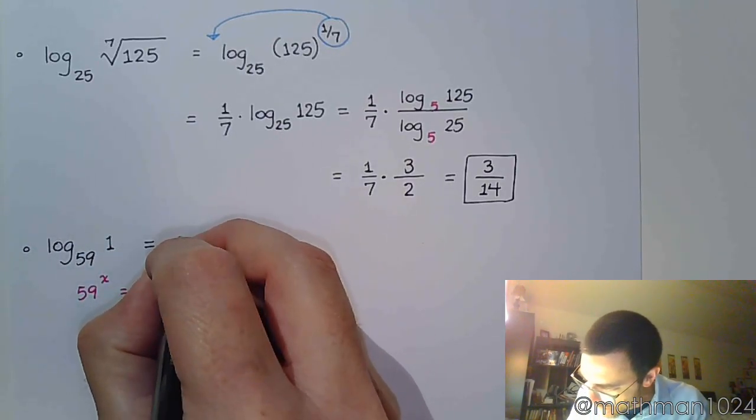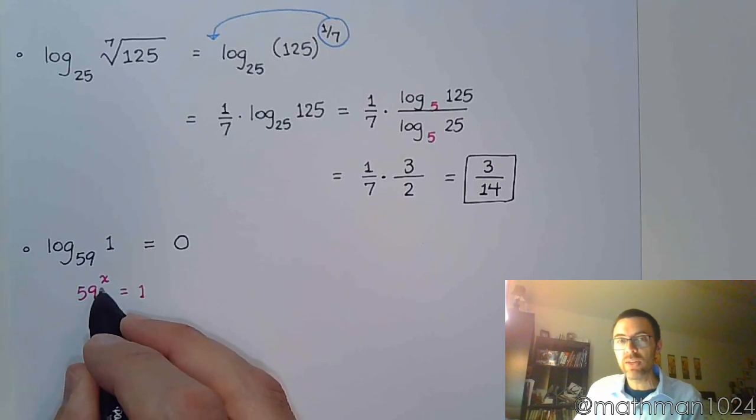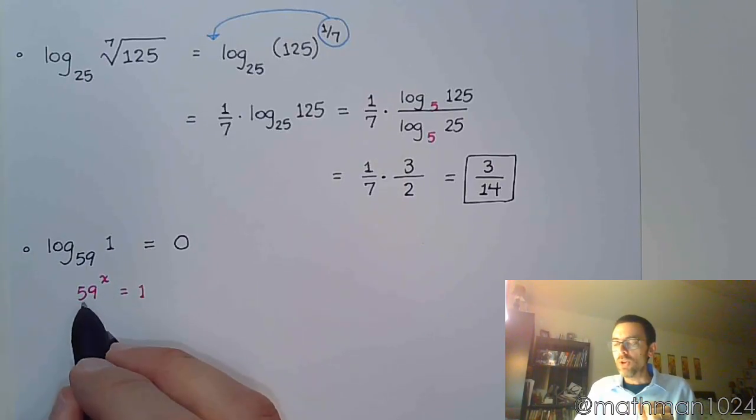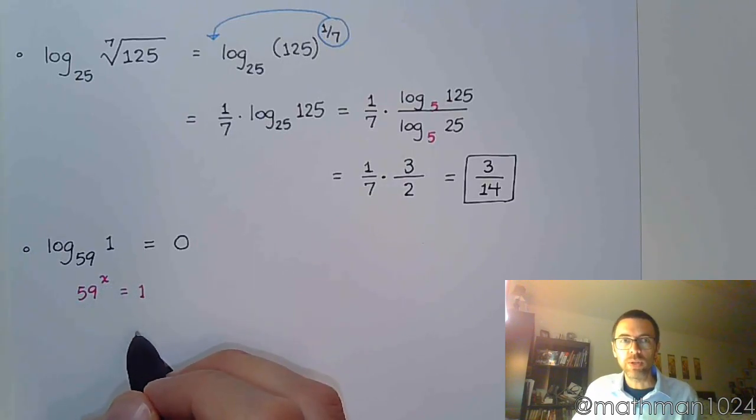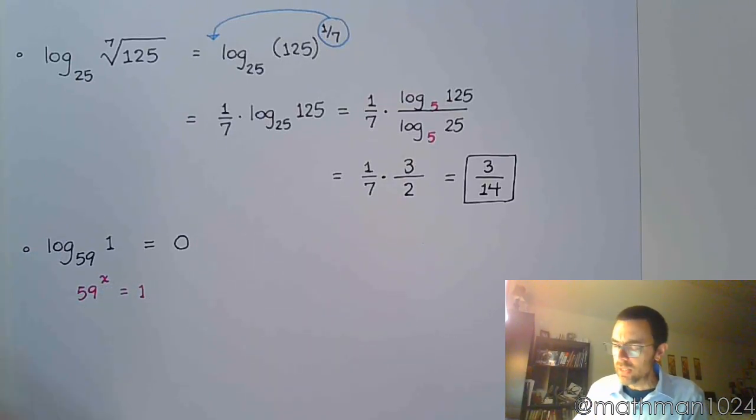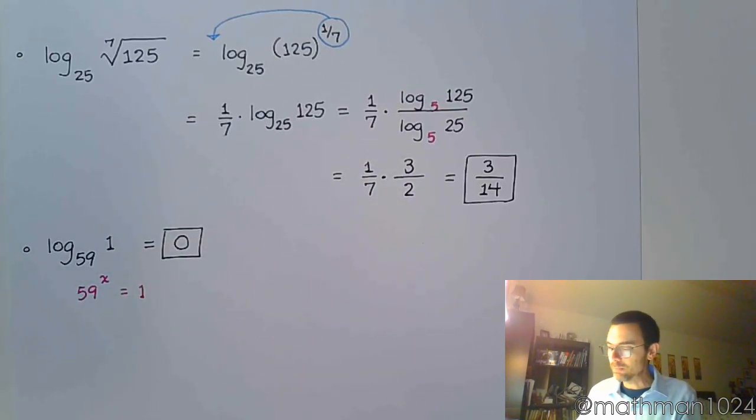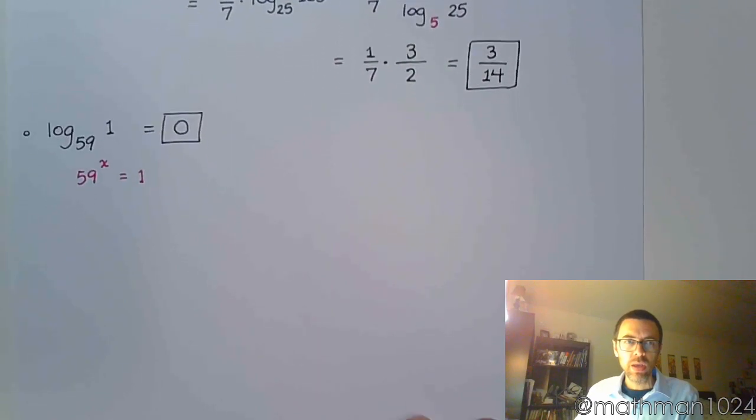You plug in 1 and you get out 0 because anything to the 0 power is going to give you 1. So, except for 0. So, 59 to the 0 gives you 1. Remember, as a little side note here, that 0 to the 0 is undefined. So, watch out for things like that. Alright.